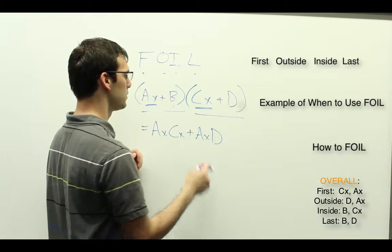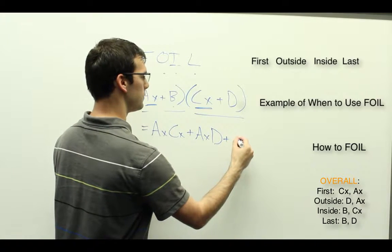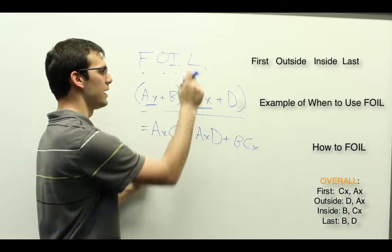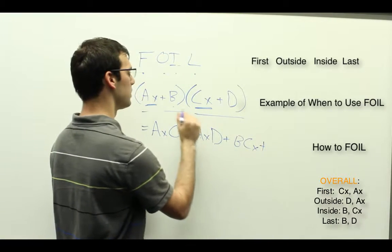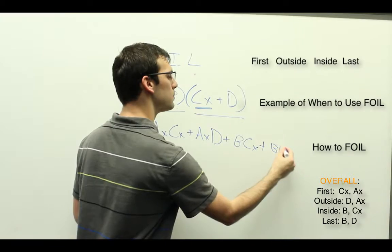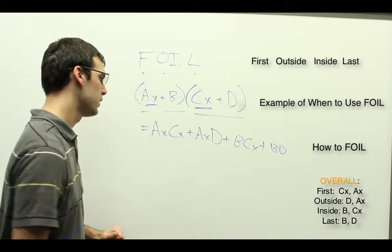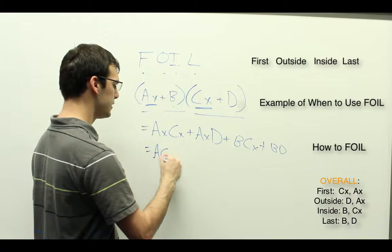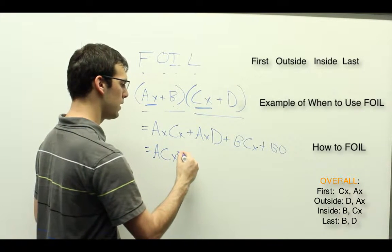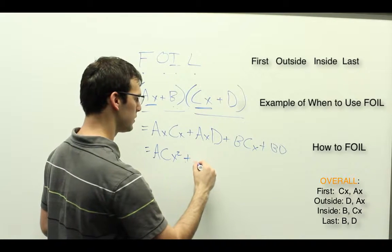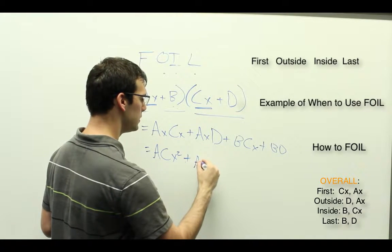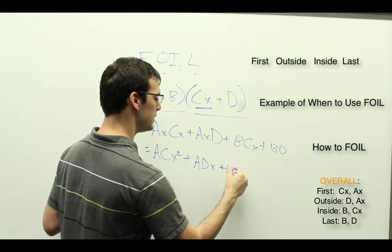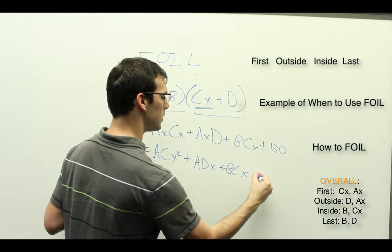Inside, so plus B times CX. And last, plus B times D. Okay, and so if we simplify that, we would get ACX squared plus ADX plus BCX plus BD.